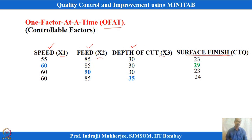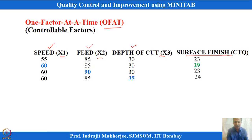This is the trend you will see most of the time if you are not familiar with design of experiments: keeping all other factors fixed, change one, then fix that one and change the next, then fix that and change the third one. This way of experimenting without statistical experimentation is known as one-factor-at-a-time. There are three factors: the first, second, and third factor.